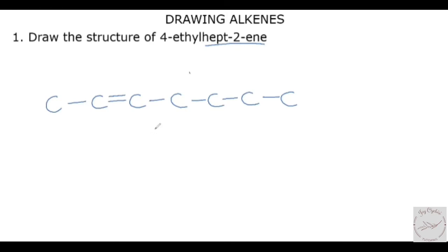The next thing we look at is the substituent, which is 4-ethyl. The 4 here is telling us that the ethyl group is attached on the fourth carbon. So since we are counting from this end, this is 1, 2, 3, and 4 — so at this place, this is where the ethyl group is attached.